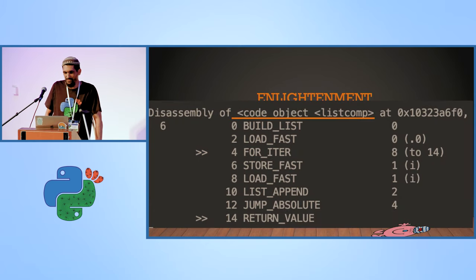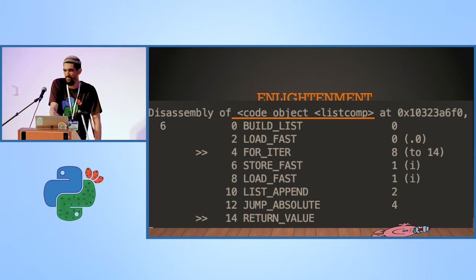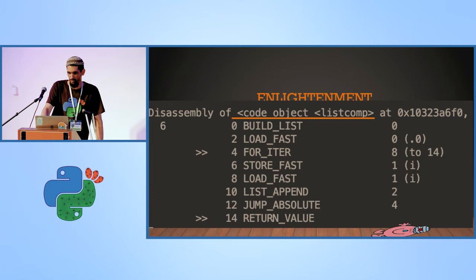A bit of bytecode of the list comprehension — I just wanted to show that it really behaves like an object from the dis perspective. When you do this, it looks like we defined a function — it has its own code inside, own variables and stuff.